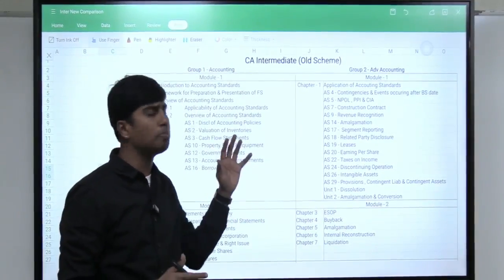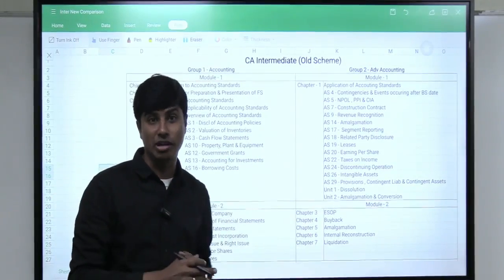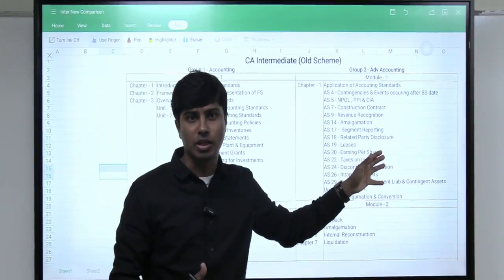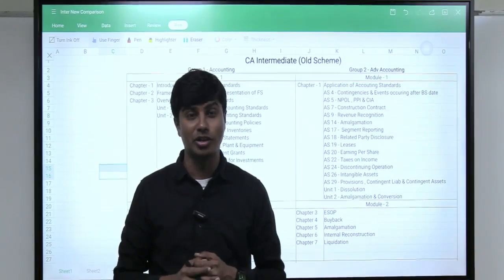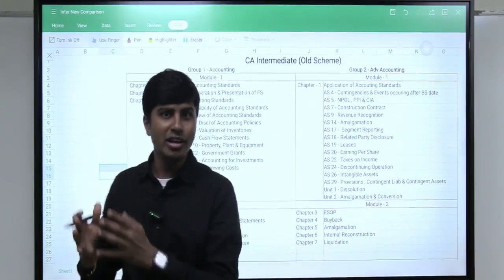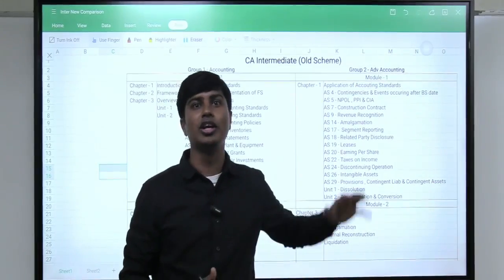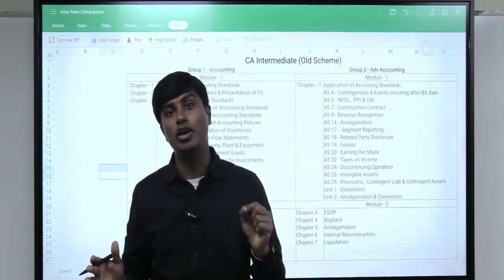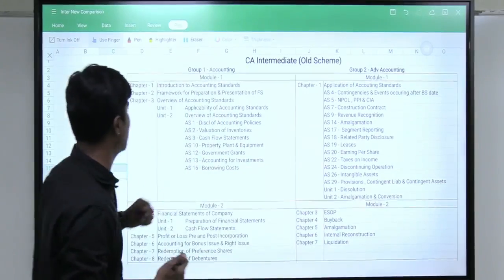Firstly, I am going to run you through what part of your Group 1 accounting is going to continue to be there under the new scheme advanced accounting. I will also run you through what part of your Group 2 advanced accounting under old scheme will continue to be there under Group 1 advanced accounting under new scheme. What should you be reading if you read only Group 1 last time? What should you be reading newly if you read only Group 2 last time? And if you read both the group accountings last time, what part of advanced accounting under the new scheme should you be learning freshly now? So let's get started.